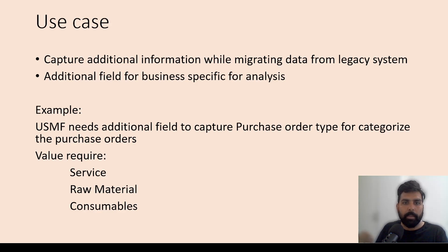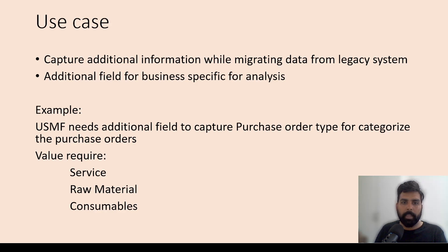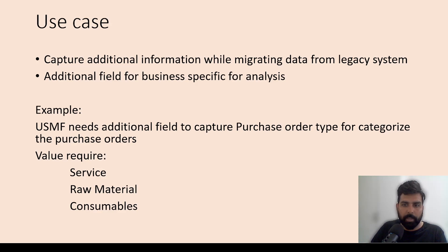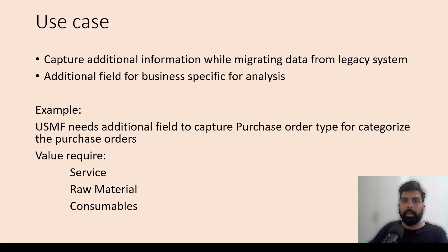For example, USMF is using Microsoft Dynamics 365 with purchase orders implemented, and the business wants to do analysis of their purchase orders based on categories. Possible categories could be service POs, raw material POs, consumables POs, and more. They want to capture these categories on the purchase order header so that when they analyze their data they can utilize this for their analysis. That is what we are going to demonstrate.